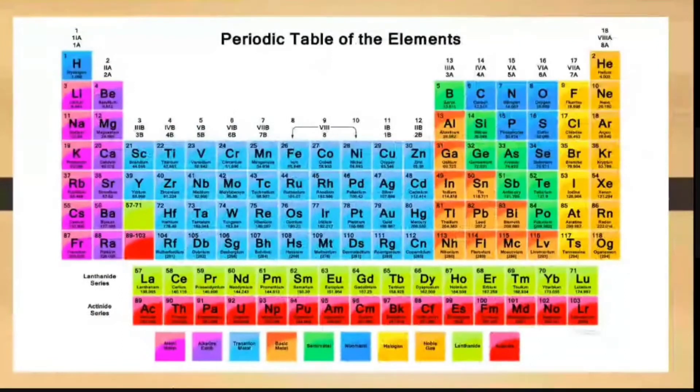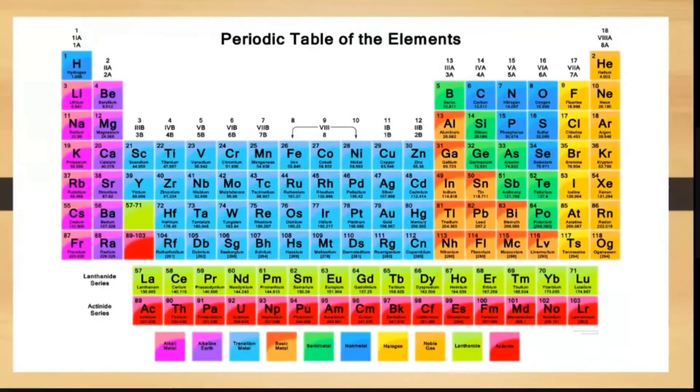Most of these elements occur naturally on earth and the rest are synthetically prepared in a laboratory. This is an example of a periodic table of elements. As you can see, there are boxes with letters and numbers inside. Each box corresponds to an element. Therefore, if you are going to count the boxes here, you will find 118 boxes, which means that there are 118 known elements as of today.